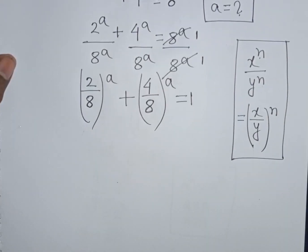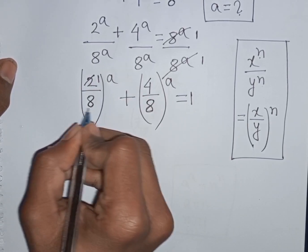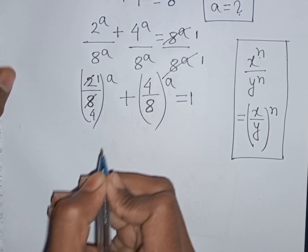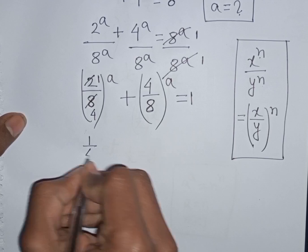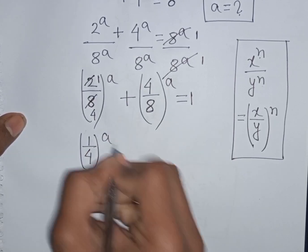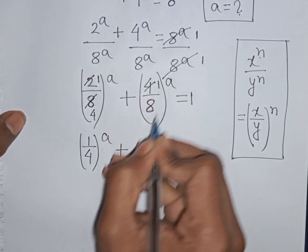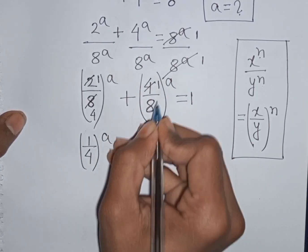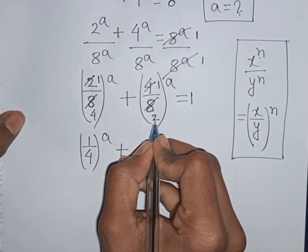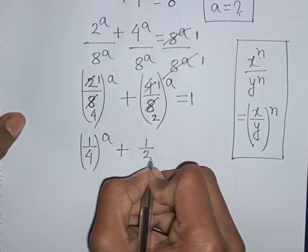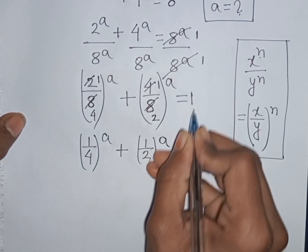Now, 2 divided by 8: that means it will be 1/4. So here (1/4)^a. Then plus: 4 divided by 4, that means it will be 1; 8 divided by 4, that means it will be 2. So we have (1/2)^a, and all of this is equal to 1.